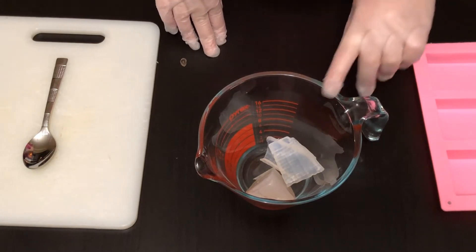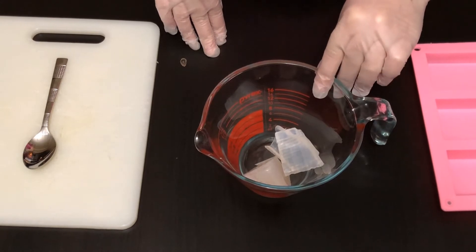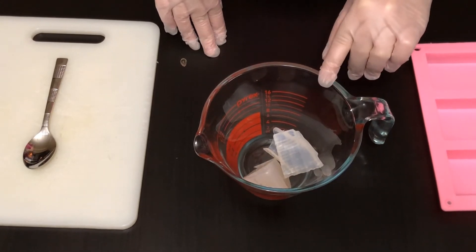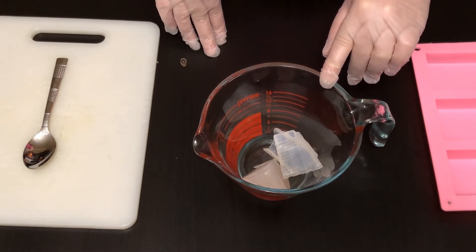So what we're going to do first is I have one and a half ounces of clear melt and pour soap. I'm going to go ahead and heat that up in the microwave and we're going to get it in our mold.